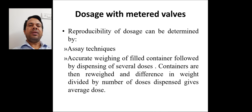Next is dosage with metered valves. Reproducibility of doses can be determined by assay techniques, and a second method is accurate weighing of filled containers followed by dispensing of several doses. In assay techniques, specific amount is taken and can be determined by different analytical procedures. In second method, containers are then reweighed and difference in weight divided by number of doses dispensed gives average dose.